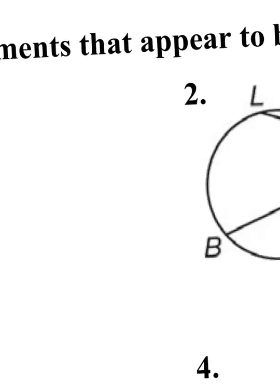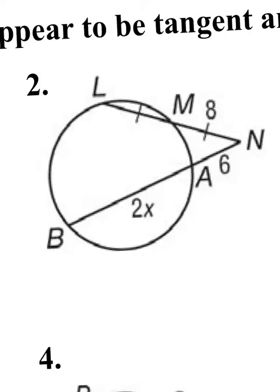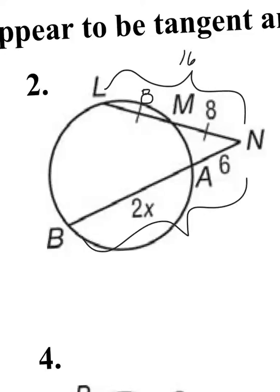Question number two. Again, I have two secants. I see that these line segments are equal to each other, so I'm going to write an 8 there. I need the sum of the whole line on the top and bottom. On the top, 8 plus 8 is 16. On the bottom, 2X plus 6. It's going to be the whole line times just the external equals the whole line times the external.